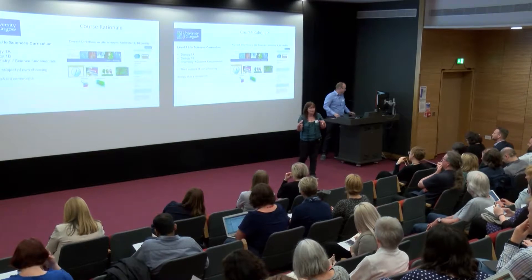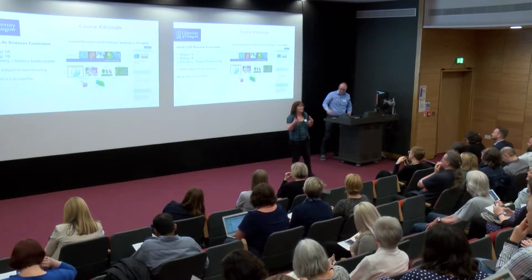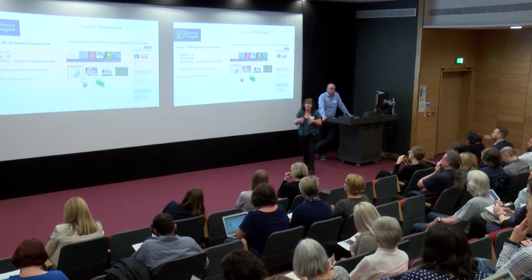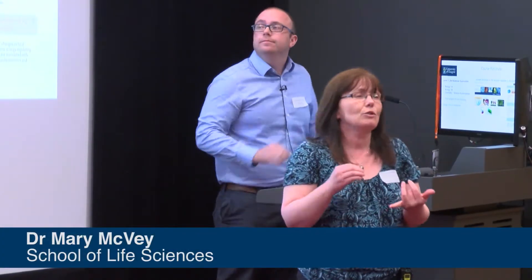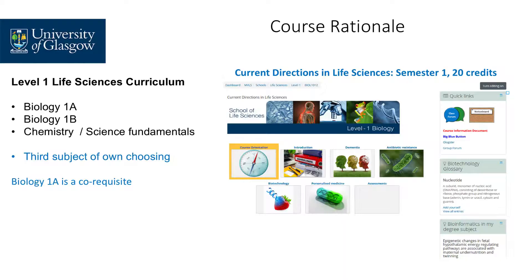First, I'll tell you about the curriculum for our life science students. In first year, if they're going to continue in life sciences, they have to do Biology 1A and Biology 1B courses. They also have to do either chemistry or science fundamentals, and those courses take up 80 of the 120 credits in their first year. So they have to choose a third subject — for some students that will be psychology, geography, and so on.